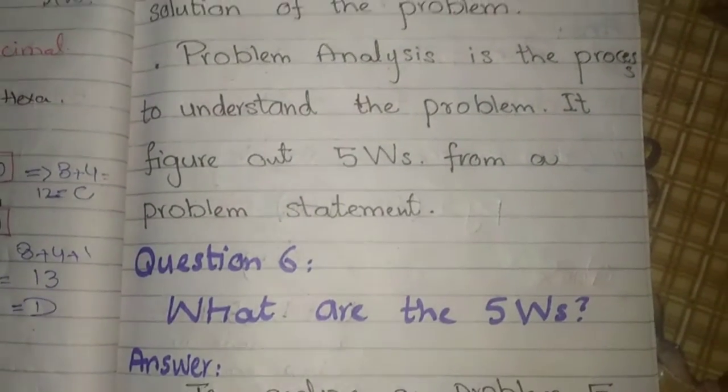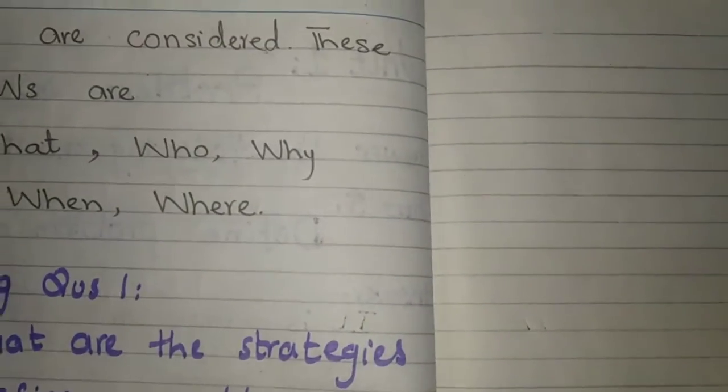Next question: what are the five W's? To analyze a problem, five W's are considered. These five W's are what, who, why, when, where.